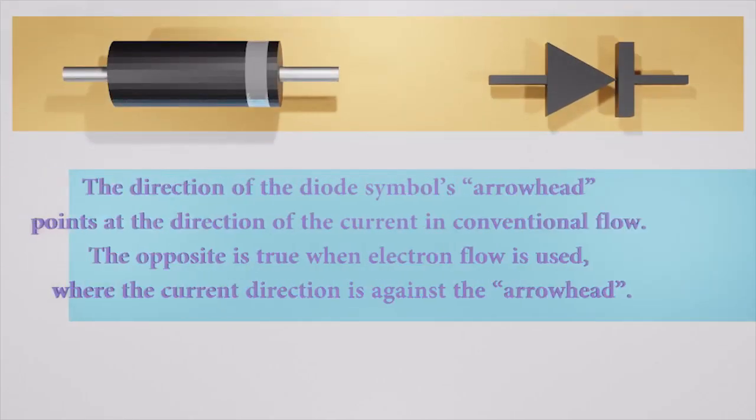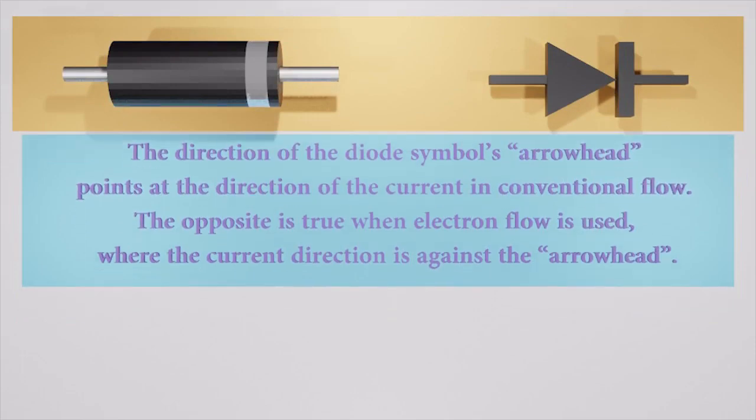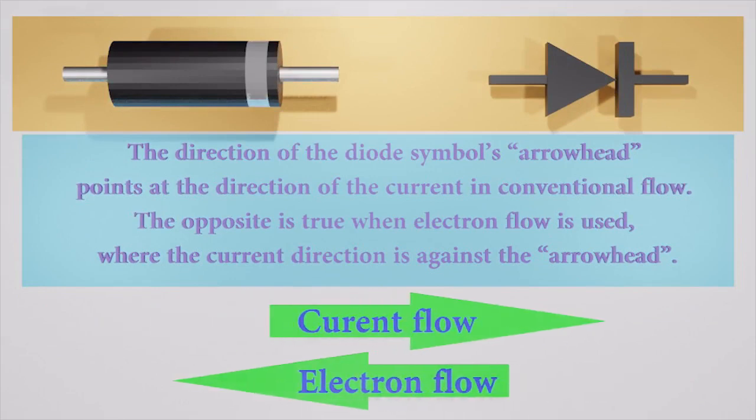The direction of the diode symbol's arrowhead points at the direction of current in conventional flow. The opposite is true when electron flow is used, where the direction of the electron is always against the arrowhead.